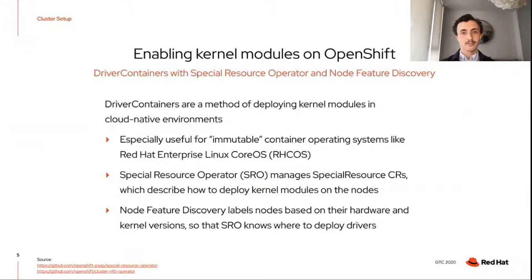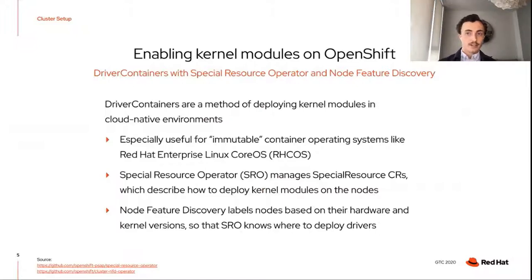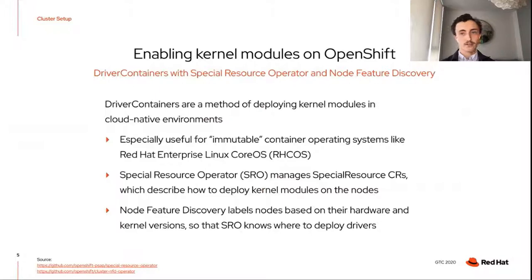Node Feature Discovery, or NFD, is another related operator used to automatically label nodes in the OpenShift cluster based on their hardware and software features. For example, the NVIDIA GPU operator uses NFD labels to know which nodes have NVIDIA GPUs based on PCI vendor ID. It also labels nodes with their kernel version so that you can know which nodes can run a certain driver container.